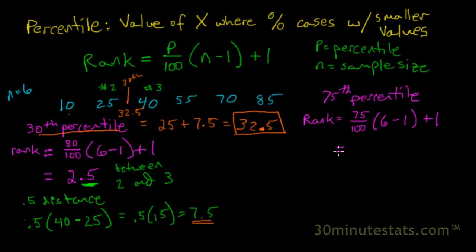That's going to be 0.75 times 5, which is going to be equal to 3.75 plus 1, so we get 4.75. So the 75th percentile is going to be between the 4th and 5th.